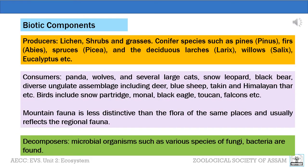Mountain systems are widely distributed across all continents from tropical to arctic latitudes and thus support vastly differing biota. Mountain ranges are home to some of the greatest regional biodiversity on the planet. Dividing the biotic components into producers, consumers, and decomposers, the producers include lichens, shrubs, grasses, conifer species such as pine, firs, and the deciduous larches, willows, and eucalyptus.